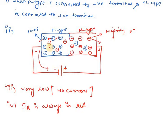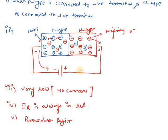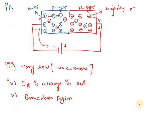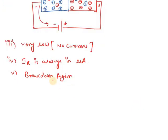Now when we go on increasing the reverse voltage, more holes and more electrons are pulled away. At a certain point there will be no holes on the p-side and no electrons on the n-side, and the junction completely breaks down. That region is called the breakdown region. There is a sudden sharp increase in current at this point. In forward bias the increase was gradual after 0.7 V, but here once it crosses the breakdown region the current rises sharply. This breakdown region is not suitable for normal operation as it can harm the circuitry.